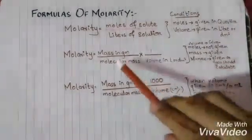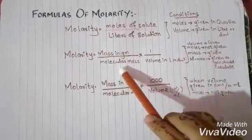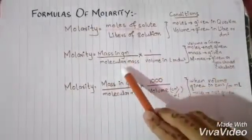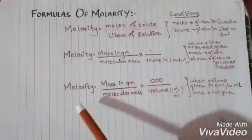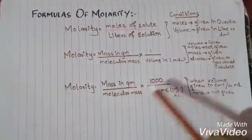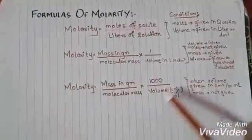Now going to the third one: molarity equals mass in grams per molecular mass multiply by 1000 per volume.